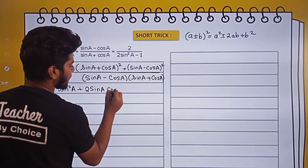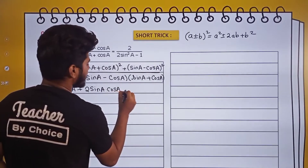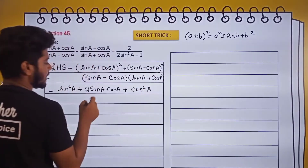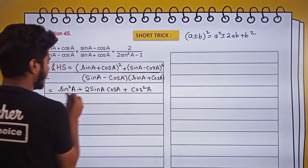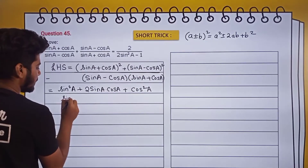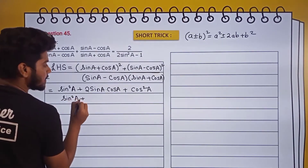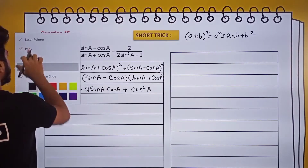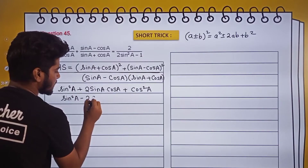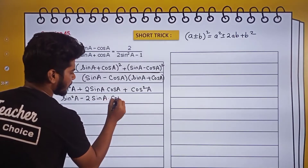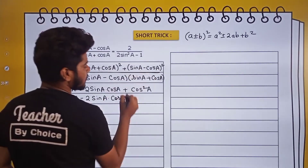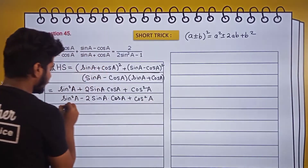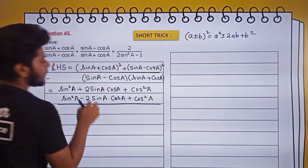...plus 2sinA·cosA plus cos²A — this is the first part. For the second part, sin²A will come, and because there is a minus sign, minus 2sinA·cosA plus cos²A. This is what we get in the numerator.